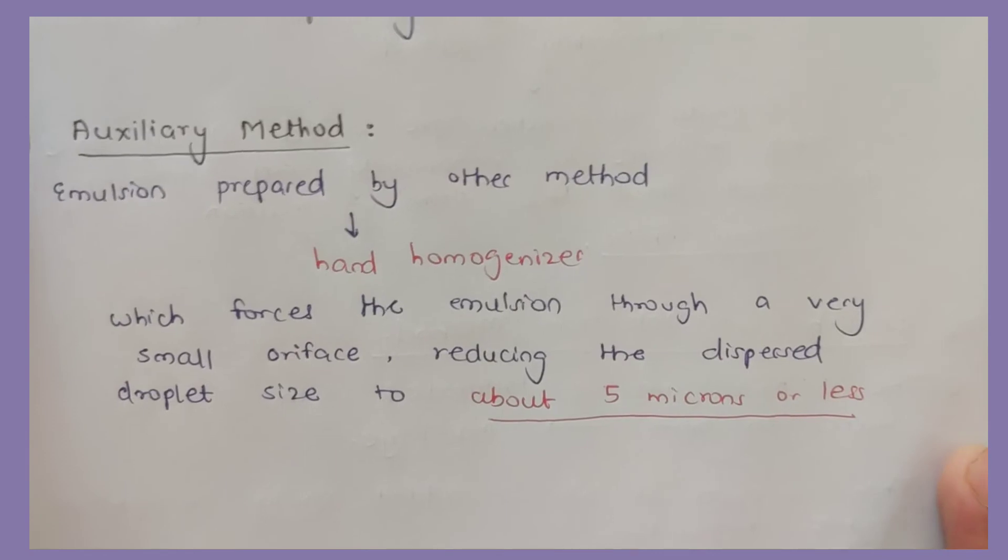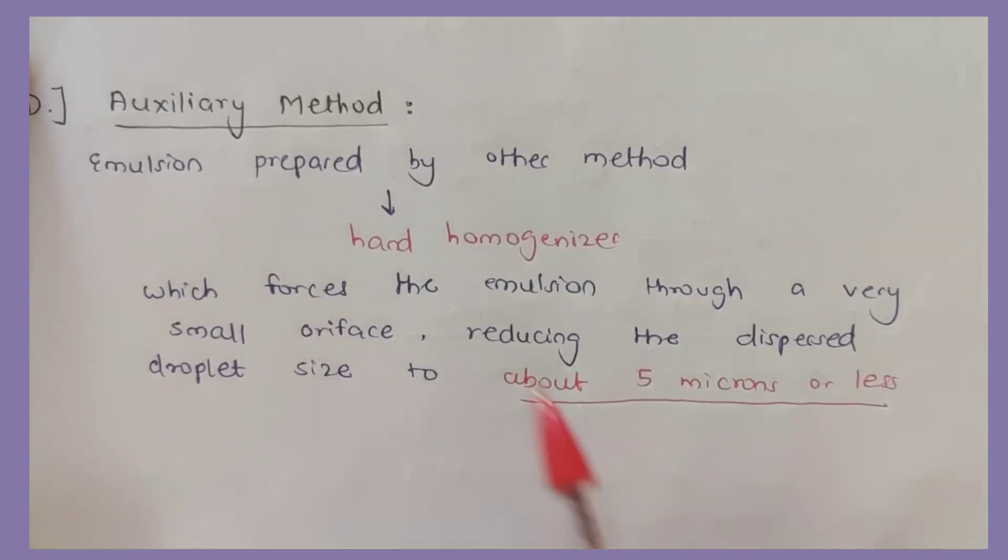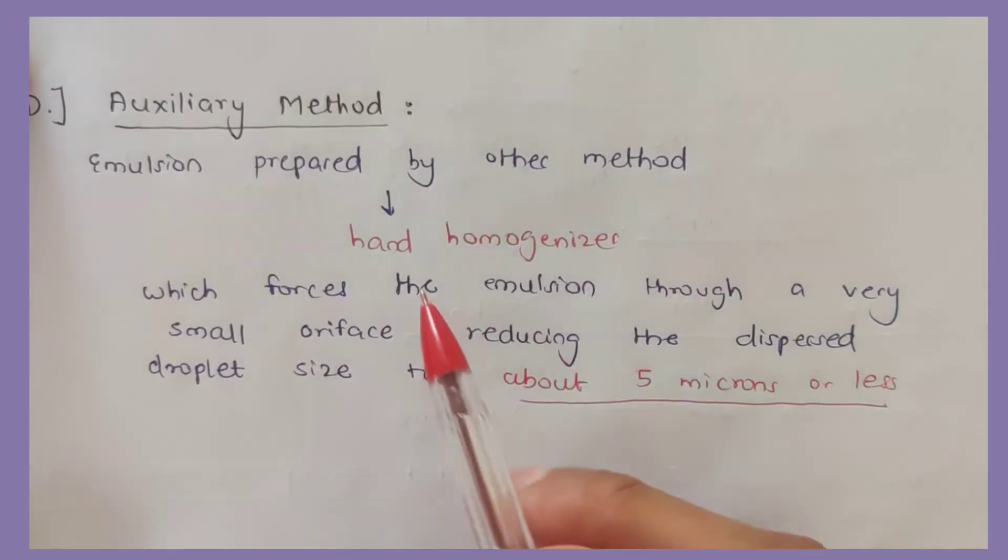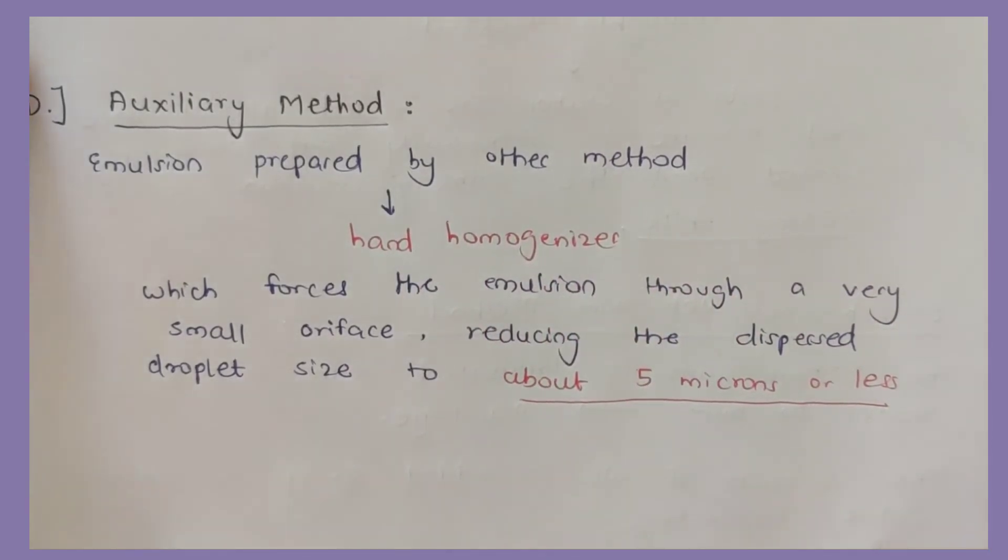Last, we have the auxiliary method. Emulsion is prepared by other methods. Hand homogenizer is a device that makes emulsion. It forces the emulsion through a very small orifice, reducing the dispersed droplet size to about 5 microns or less.